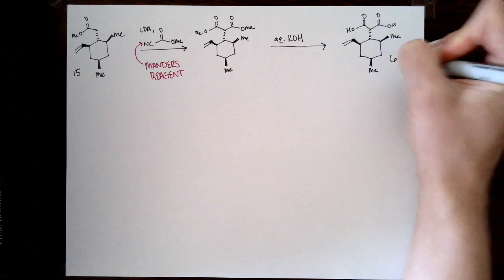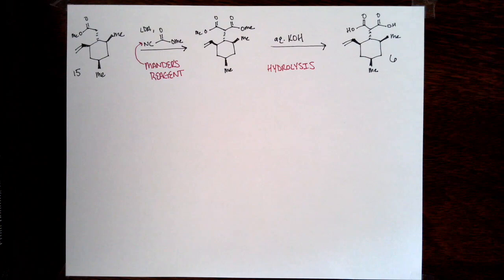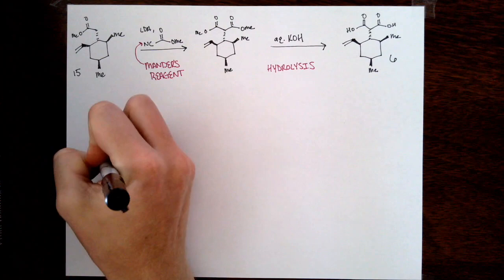The last step of this formation of fragment 6 was to install the second part of the diacid moiety. They use LDA and Mander's reagent to install an ester alpha to the carbonyl present in molecule 15. This is then followed with in situ hydrolysis with potassium hydroxide to form the diacid. They mentioned that this reagent is specifically used in this case because they weren't seeing reactivity utilizing other reagents.